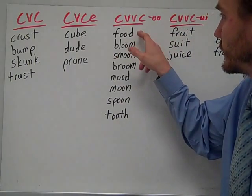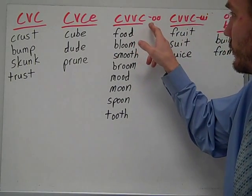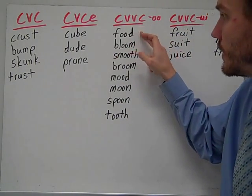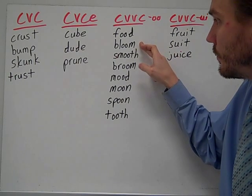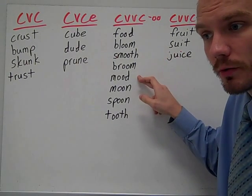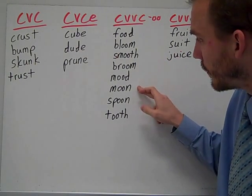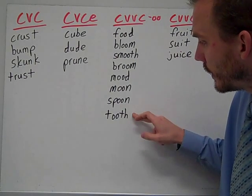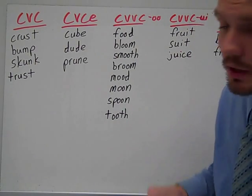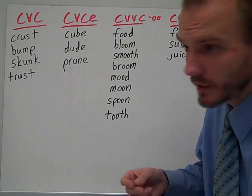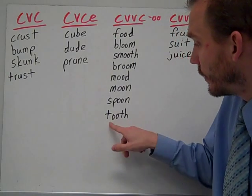Now the CVVC pattern with OO — still that long U sound. You have food, bloom, smooth, vroom, mood, moon, spoon, and tooth. That OO sound creates the long U.